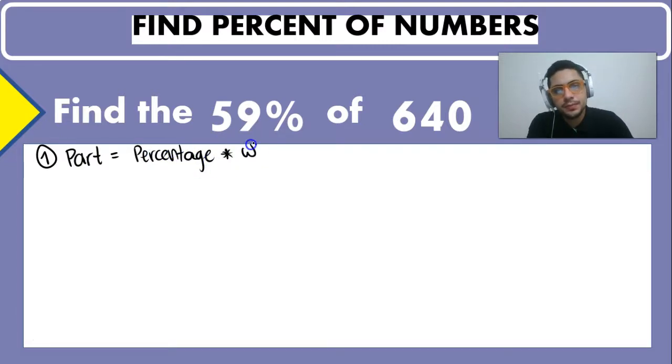So whenever we're going to find an amount of a total or the whole we're gonna multiply it by the percentage. So in this case the percentage is going to be 59% and we're gonna multiply it by the whole or the total which is going to be 640.